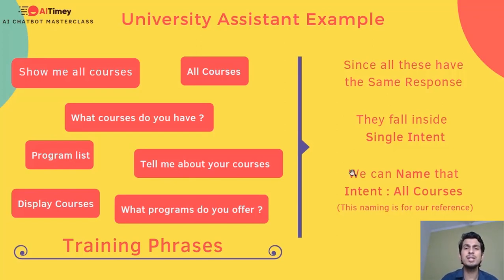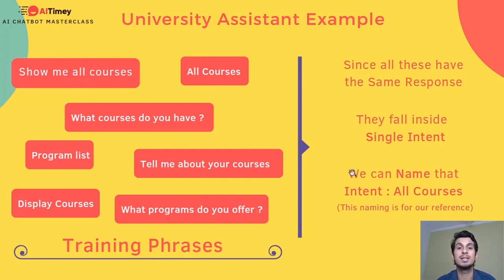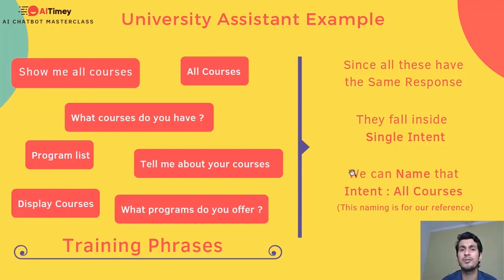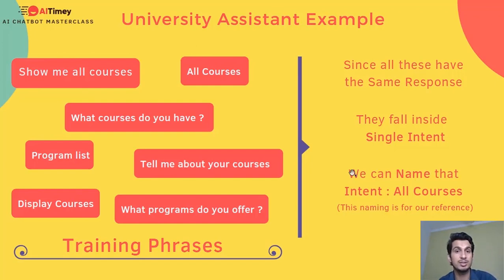You can see these sentences are a bit different — somewhere it says 'show me all courses,' somewhere it says 'what programs do you offer' — but the intent is the same; the answer the student is trying to get is the same. Hence all these phrases go into one single intent as training phrases. We can name this intent 'all courses' so the developer gets a reference to where the answer for all courses is stored.